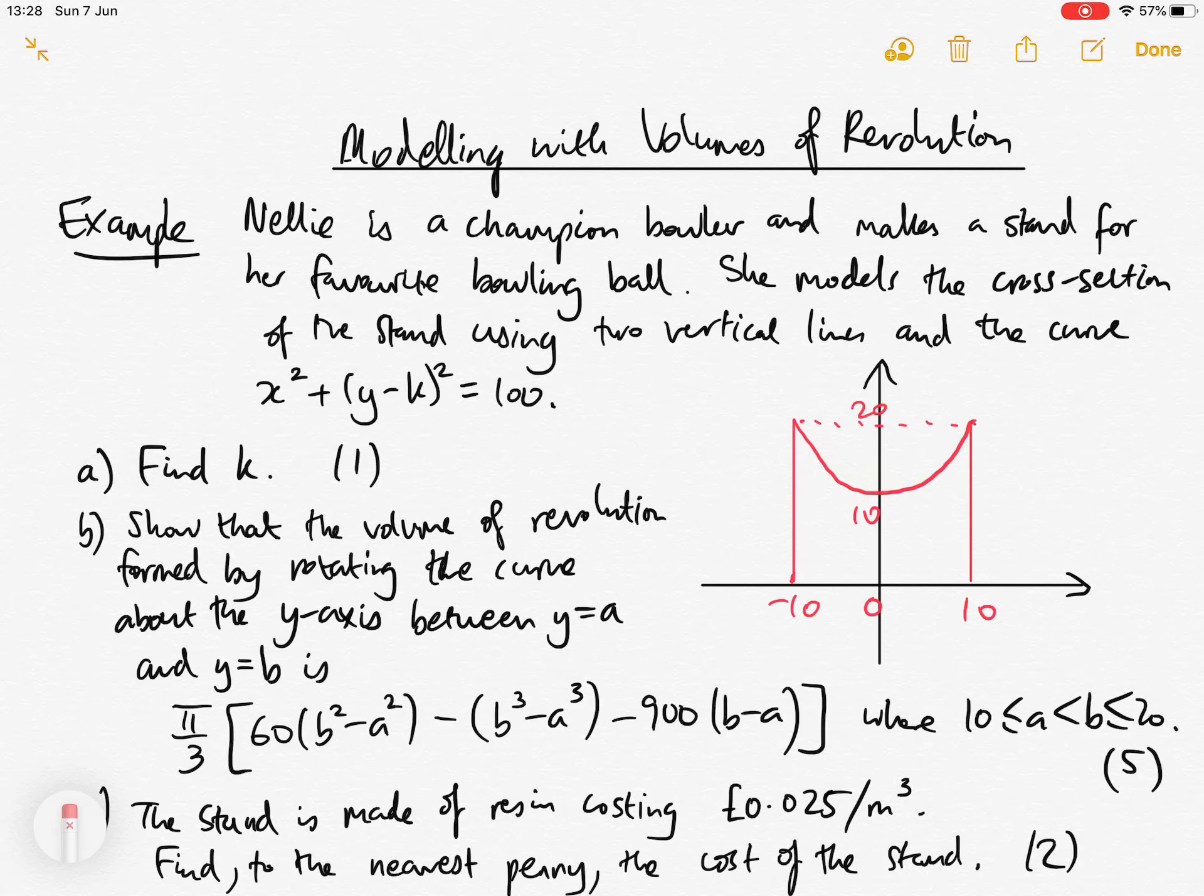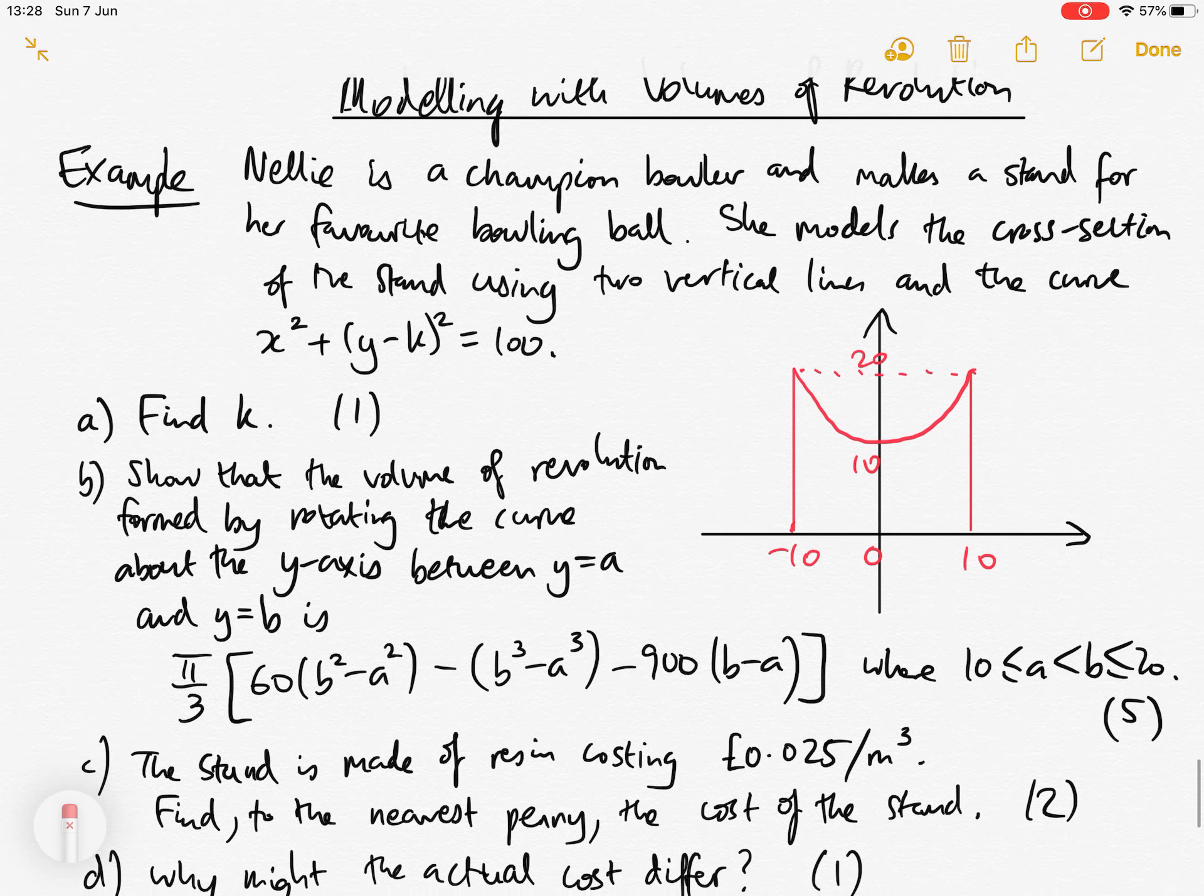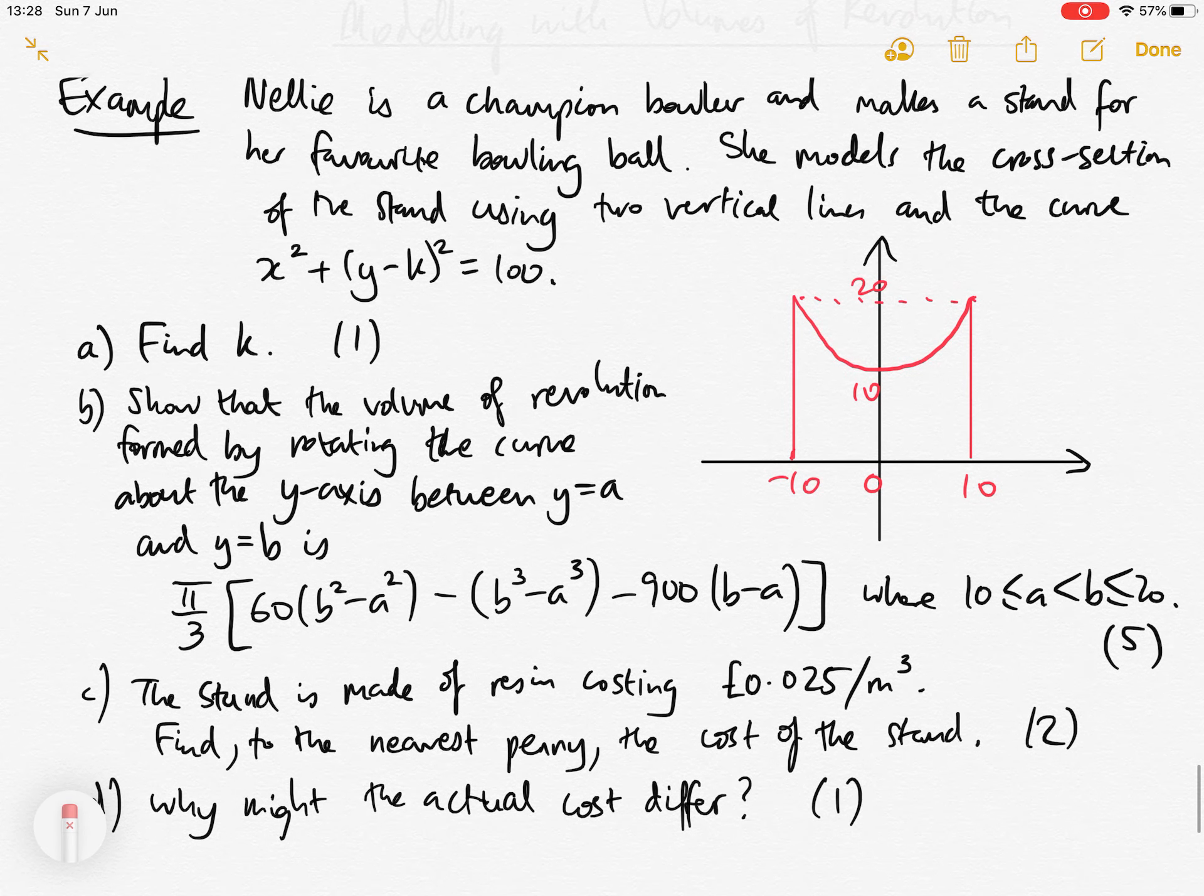Modelling with volumes of revolution is a very common type of question in the exam, and sometimes these questions are quite difficult. Here's one example: somebody who's a champion bowler makes a stand for her favorite bowling ball. She models the cross section of the stand using two vertical lines and part of the curve x squared plus y minus k squared equals 100.